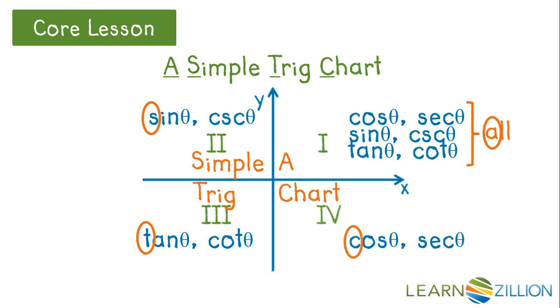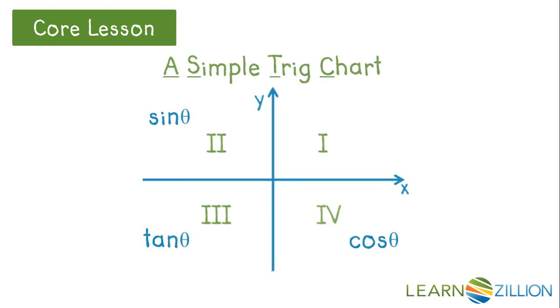If a trig ratio isn't listed here as positive, it's negative. Now you know the signs of all six functions in every quadrant. Here it is one more time.